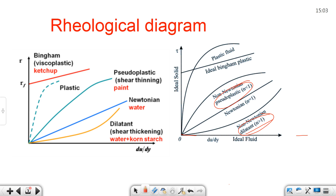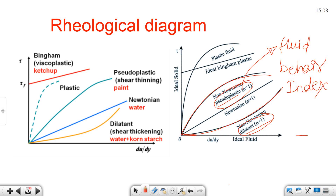Both dilatant and pseudoplastic are non-Newtonian fluids, but the nature of their curves is different — hence different names are given. The index n represents the fluid behavior index, which indicates how a particular fluid behaves. If n equals 1, it follows Newton's law of viscosity — that is Newtonian fluid. If n is greater than 1, it is a dilatant fluid. If n is less than 1, it is a pseudoplastic fluid.